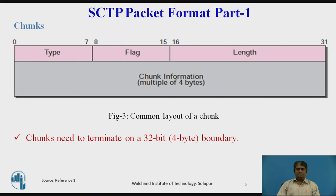The common fields are: type — an 8-bit field that can define up to 256 types of chunks, with only a few defined so far; flag — an 8-bit field defining special flags a particular chunk may need, where each bit has a different meaning depending on the chunk type; and length — a 16-bit field defining the total size of the chunk in bytes, including the type, flag, and length fields. If a chunk carries no information, the value of the length field is 4 bytes.